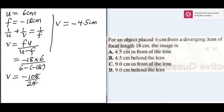So the negative sign shows that the answer is B, which is 4.5 cm in front of the lens because it's virtual. If it was real, it would be behind the lens. When it's virtual, negative 4.5 cm means in front of the lens.